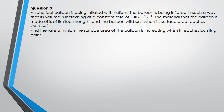Question three: you've got a spherical balloon increasing its volume at 300 cubic centimetres per second. The material has limited strength so it will burst when the surface area reaches 7500 cm². We're trying to figure out the rate at which the surface area is increasing when it reaches bursting point. This is what I call a 'triple threat' rate of change question. We have dV/dt equals 300.